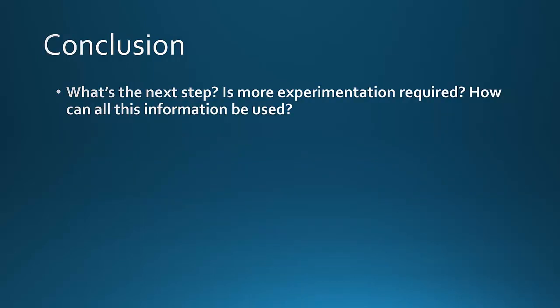For the conclusion, you start with the question: what's the next step? Is more experimentation required? How can all this information be used? The purpose of the conclusion is to let the reader know what comes next or what can be done now that you've completed the experiment and analyze the results. So, remember, a conclusion is a lot like a sum. It's more than one thing added together.